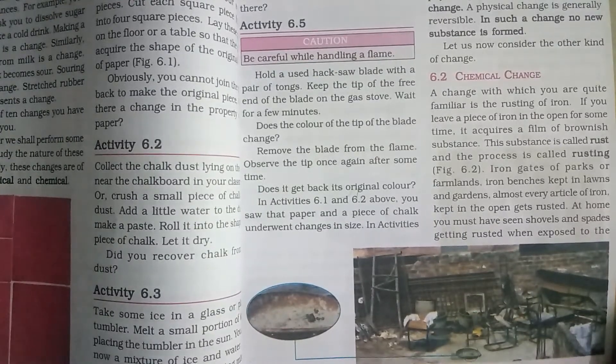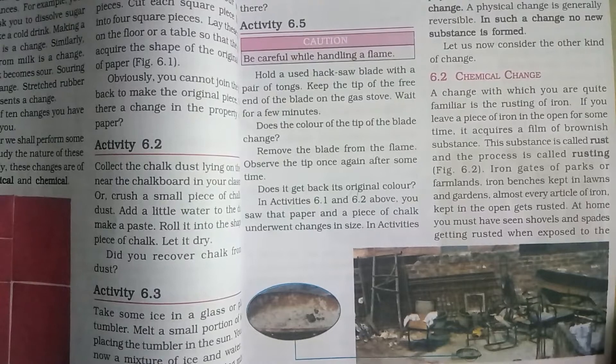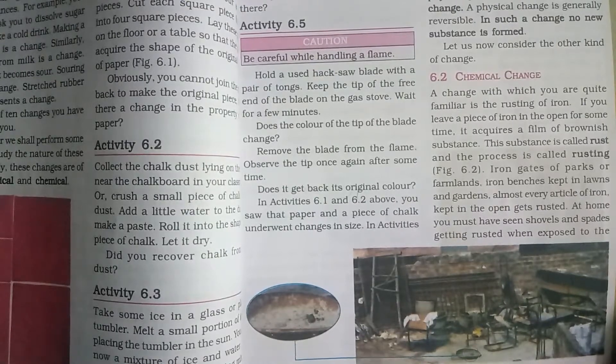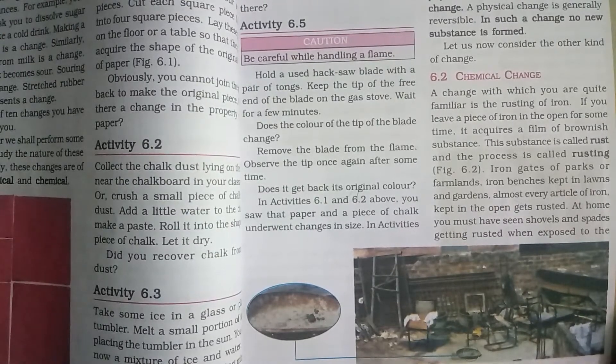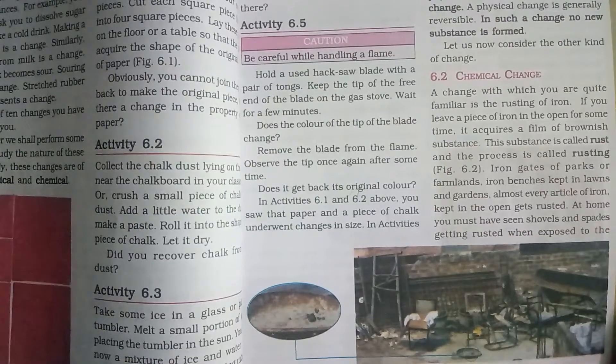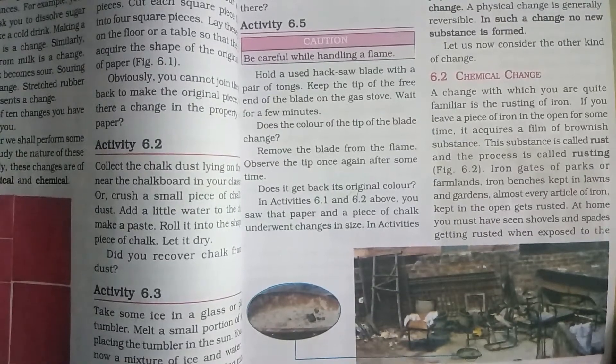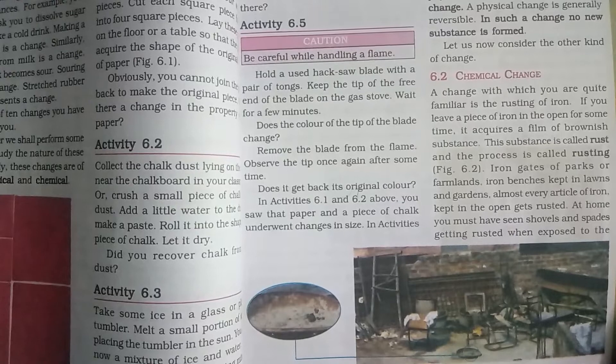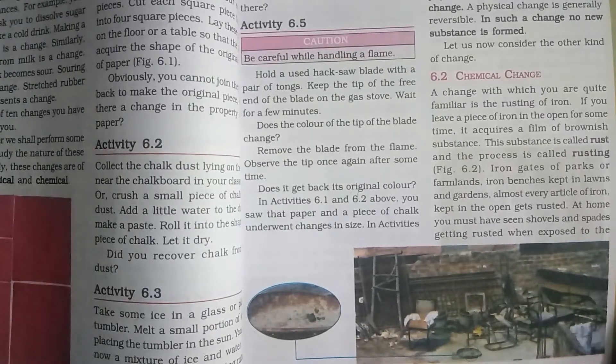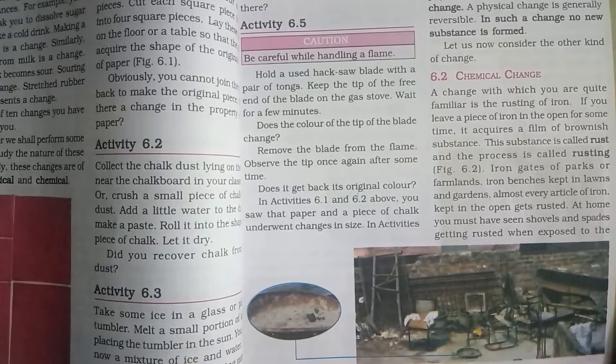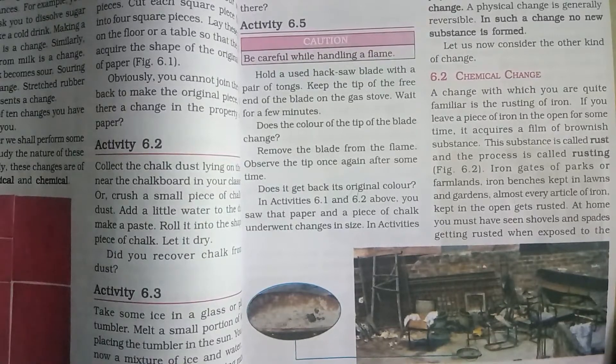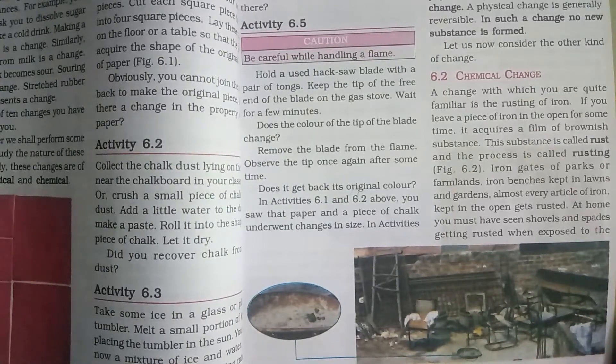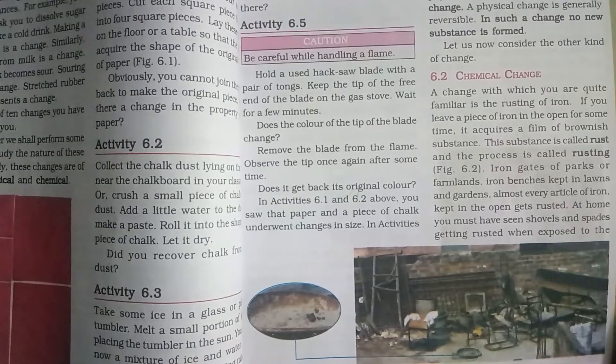That brownish layer which will be formed on the iron piece when it is kept open for some time outside the house, the brownish substance we call rust and the process we call rusting. This includes iron gates in front of our houses or buildings and all these things.